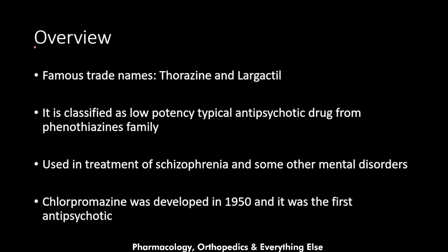Let's start with an overview. Chlorpromazine is the scientific name of the medication, and the famous trade names are Thorazine and Largactil. It is classified as a low-potency antipsychotic, meaning it is less effective compared with high-potency antipsychotics like haloperidol. It is a typical antipsychotic — antipsychotics are classified into two major groups: the typicals and the atypicals.